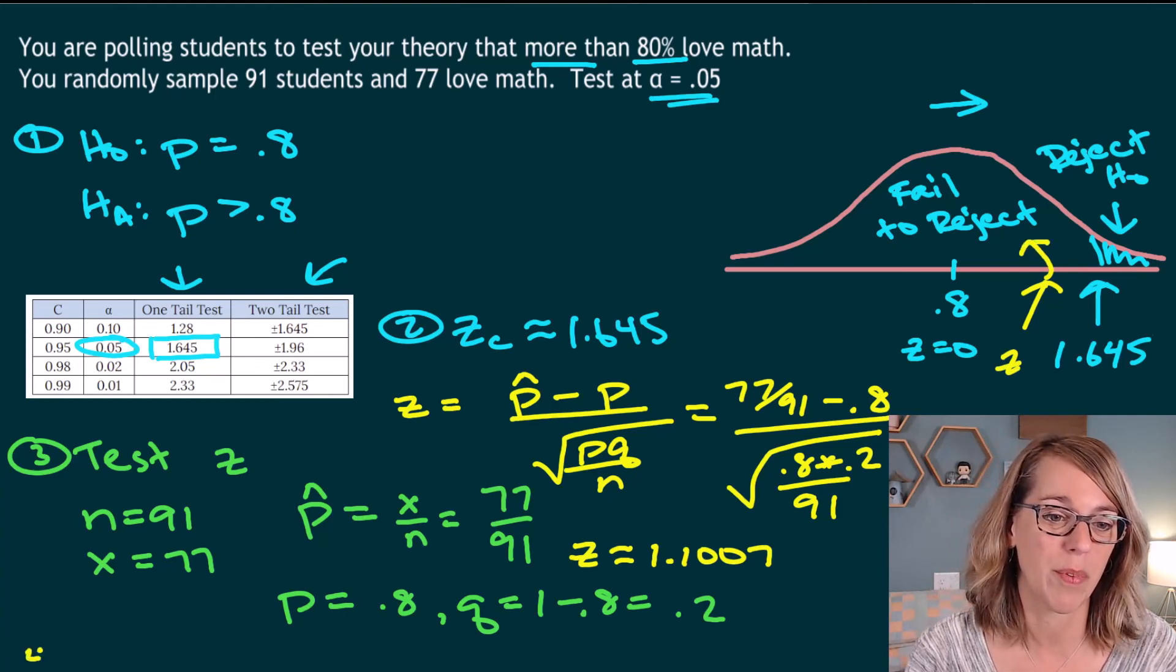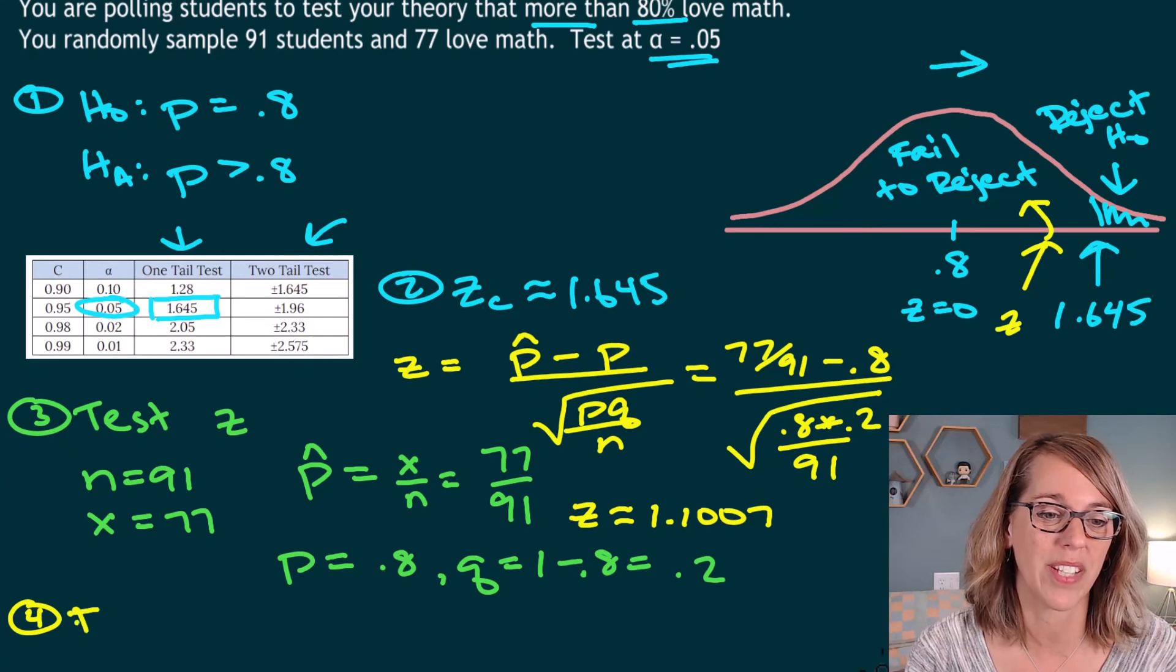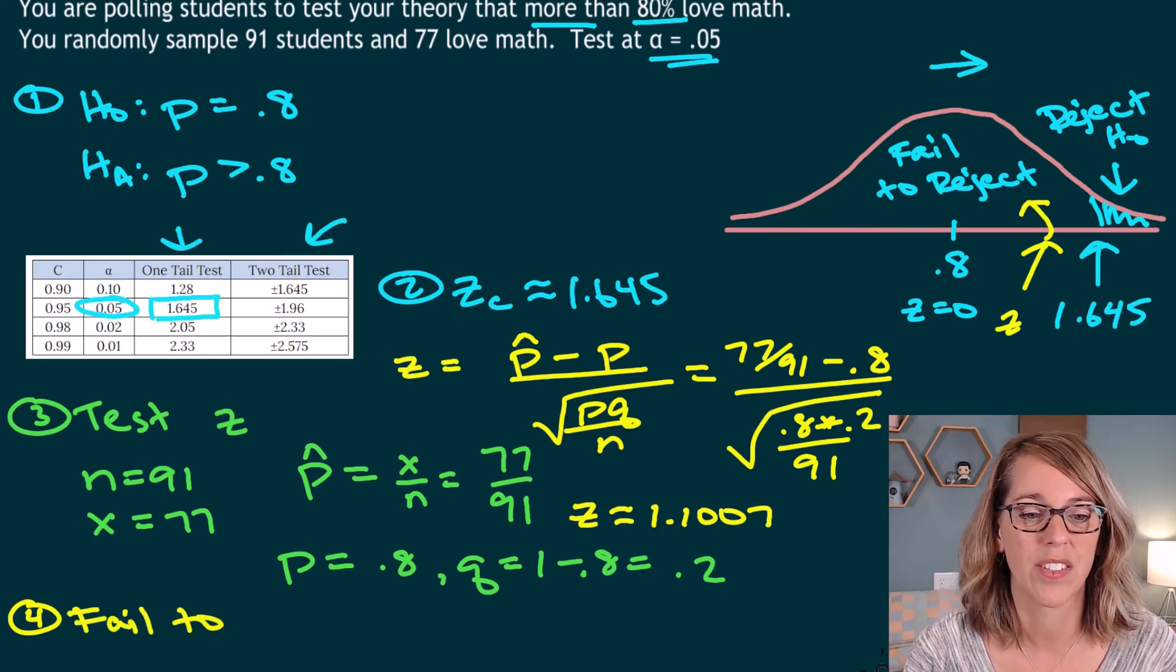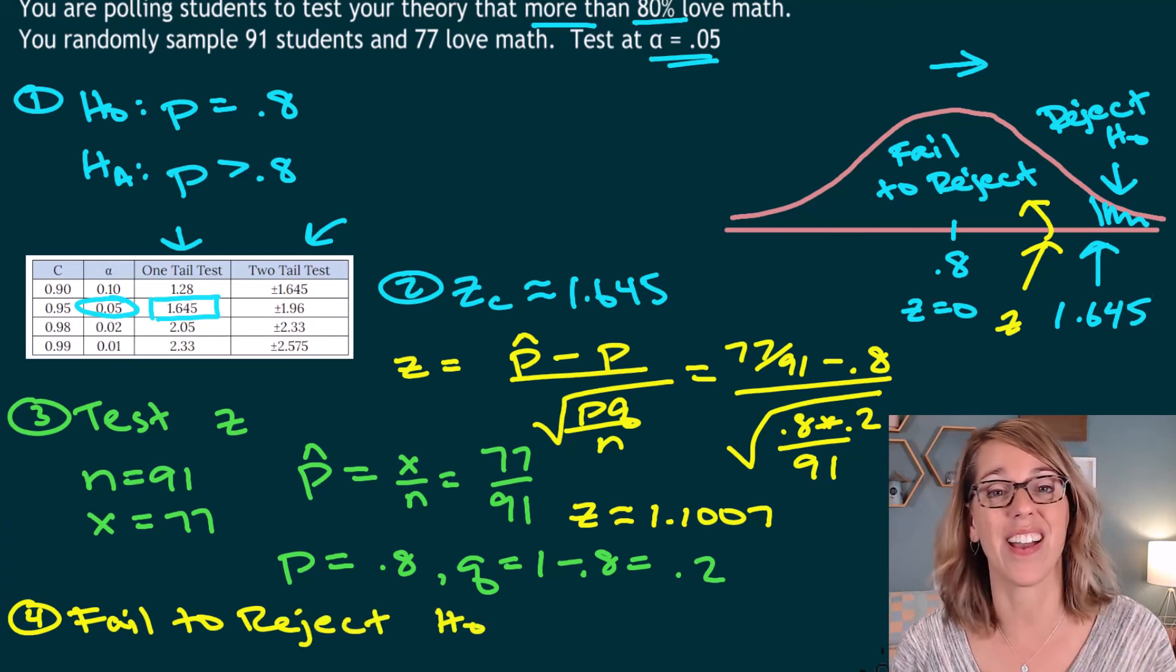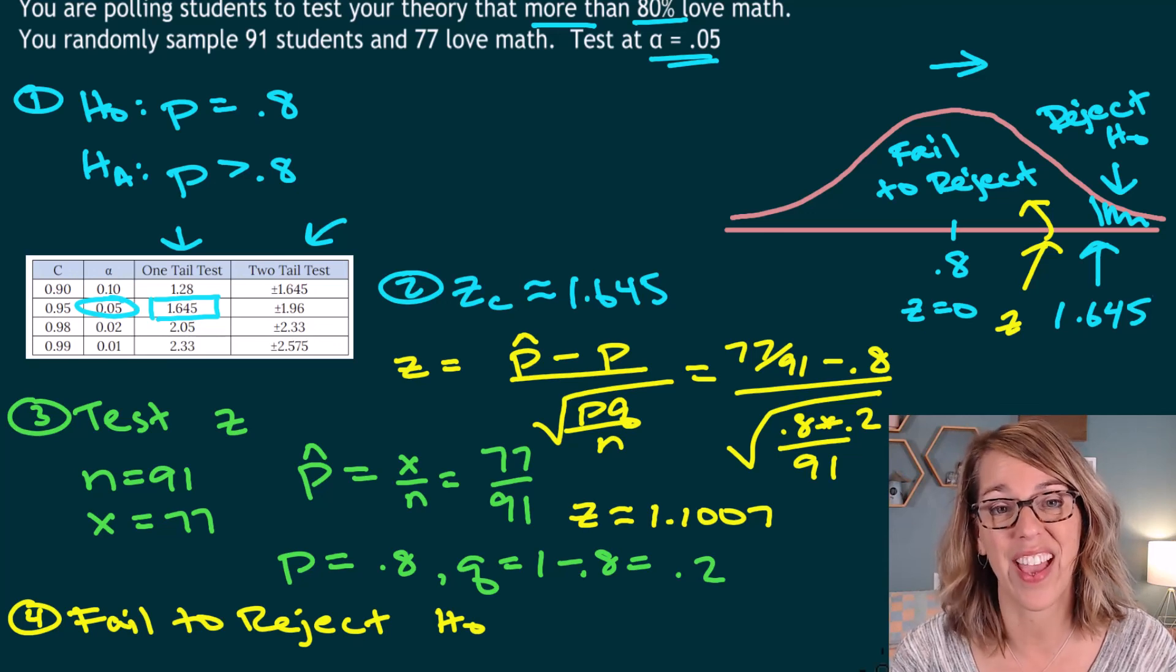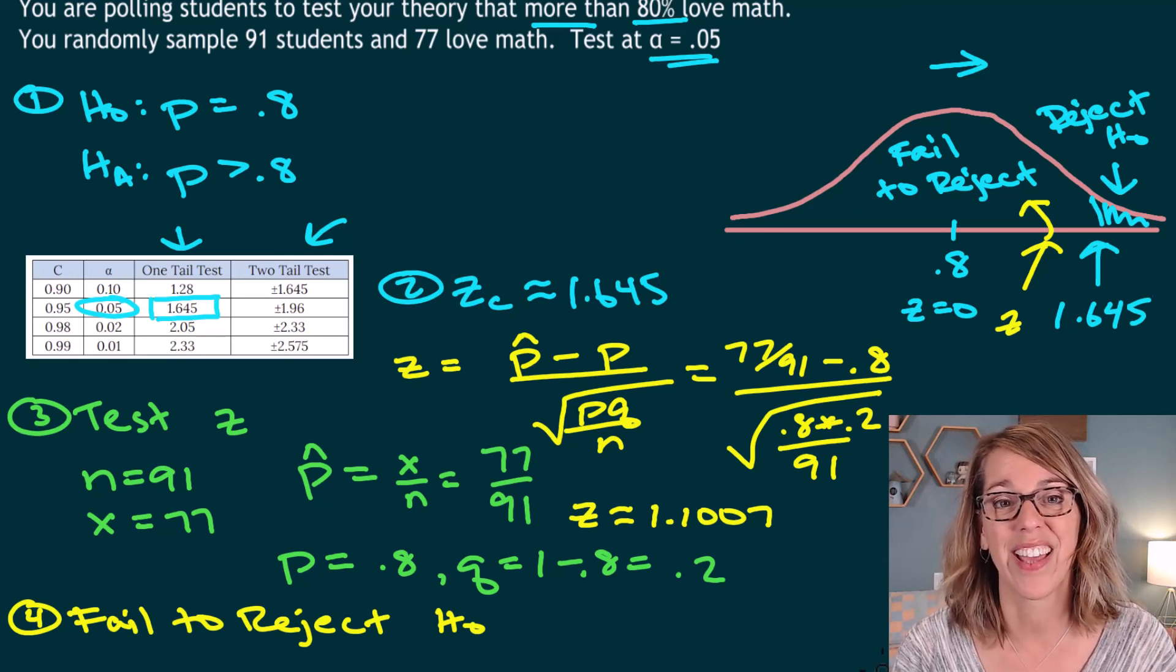So that gives me step number four. So step number four, I would say that I do end up failing to reject. So I'm going to fail to reject that null hypothesis, and we can say that it is not significantly more than 80% of students that love math.